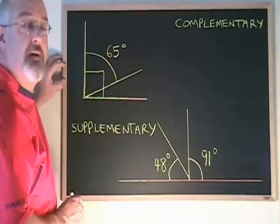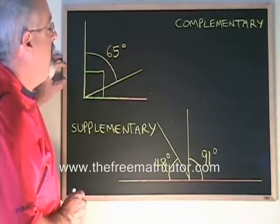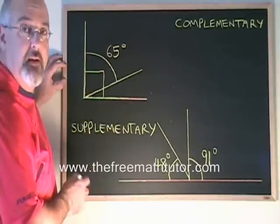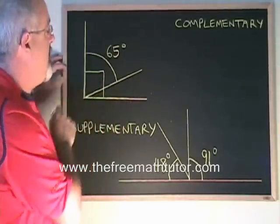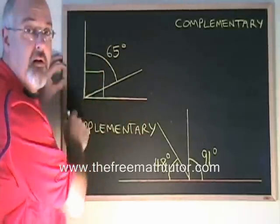We can use this rule to figure out the measure of a missing angle. Here, our diagram shows us with this square that this is a right angle, 90 degrees.